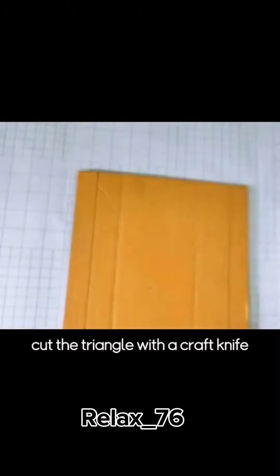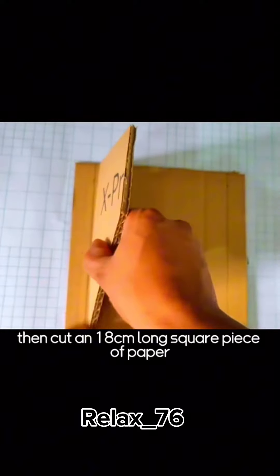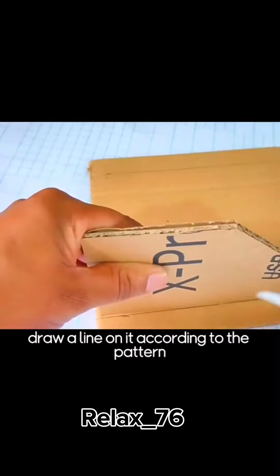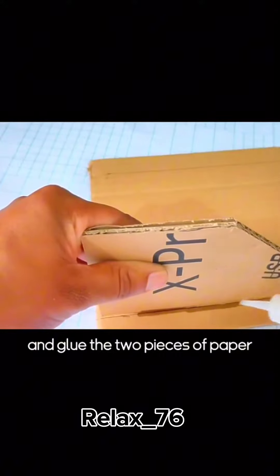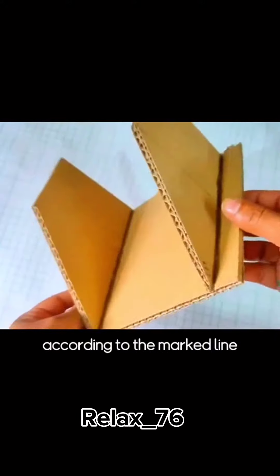Cut the triangle with a craft knife, then cut an 18-centimeter long square piece of paper, draw a line on it according to the pattern, and glue the two pieces of paper according to the marked line.